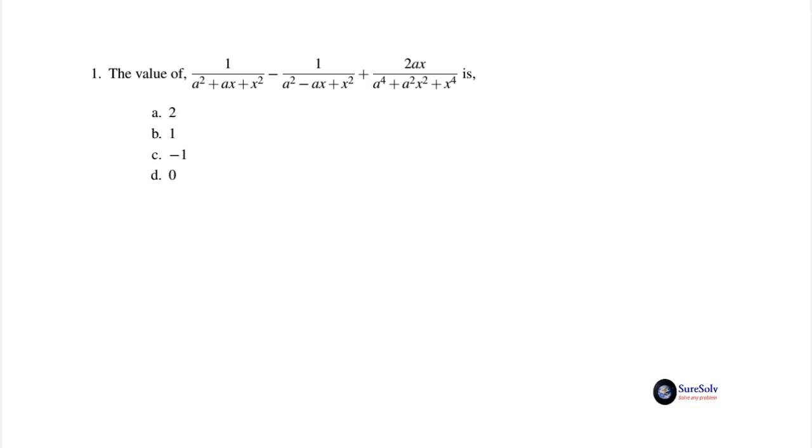So it's clear that the first two terms are to be combined first. This is the first decision. Now we notice a pattern. In the first two denominators all the three terms are same in value, but only ax is opposite in sign. ax is positive in this denominator while it is negative in the second denominator. It is a clear case for applying the most frequently used algebraic correlation (p + q)(p - q) = p² - q².